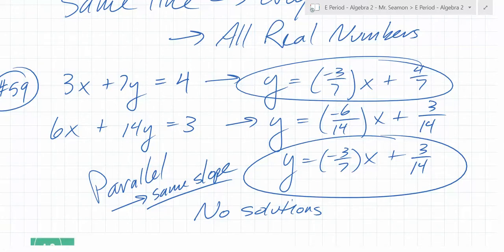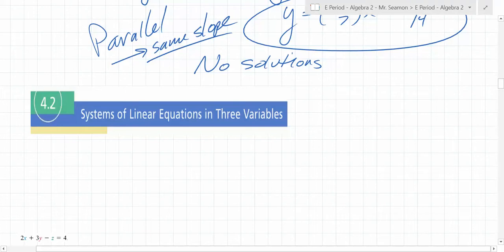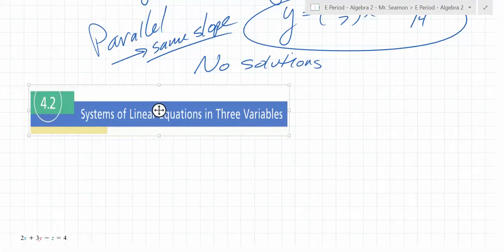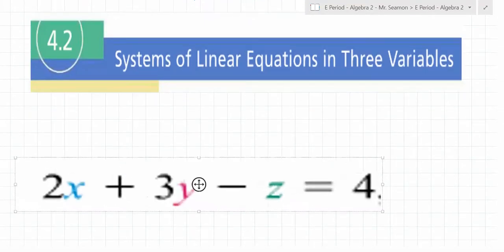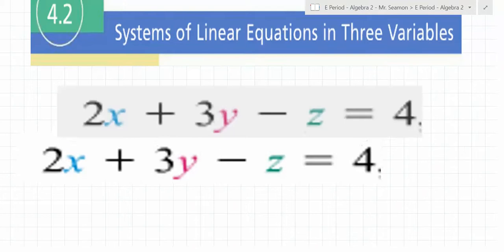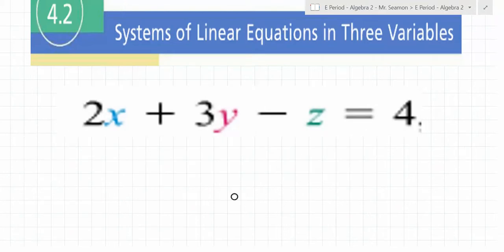Put everything away except a pencil. Here's the fun thing: systems of linear equations in three variables. What's the new thing? Z. Structurally, is anything going to change? Not really. We're going to add and subtract from both sides, isolate, substitute, and eliminate. The mechanisms stay the same.